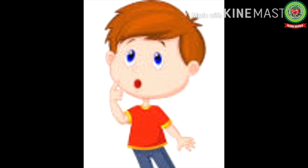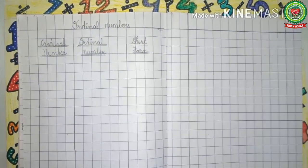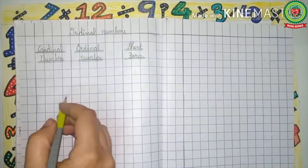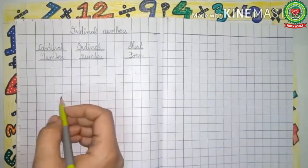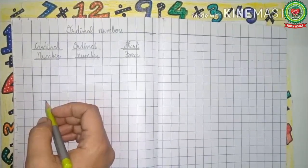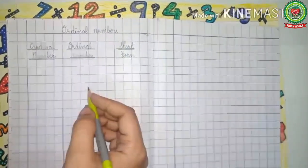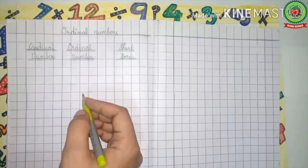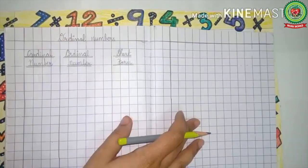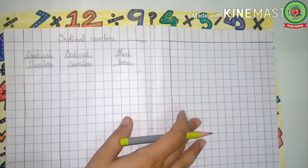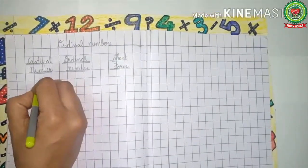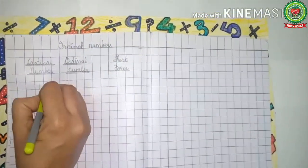Now let us practice ordinal numbers from 11 till 20 on copy. As you can see, I have divided this page into three parts. In the first part we will write the cardinal numbers from 11 till 20, in the second part we will write their ordinal numbers, and in the third part we will write the short form.